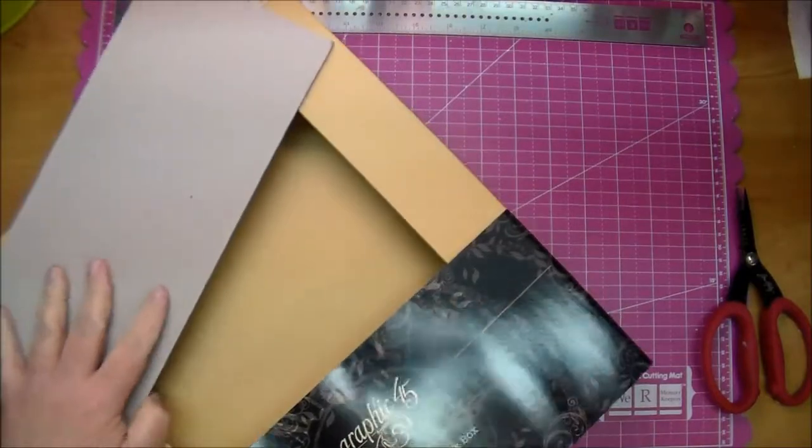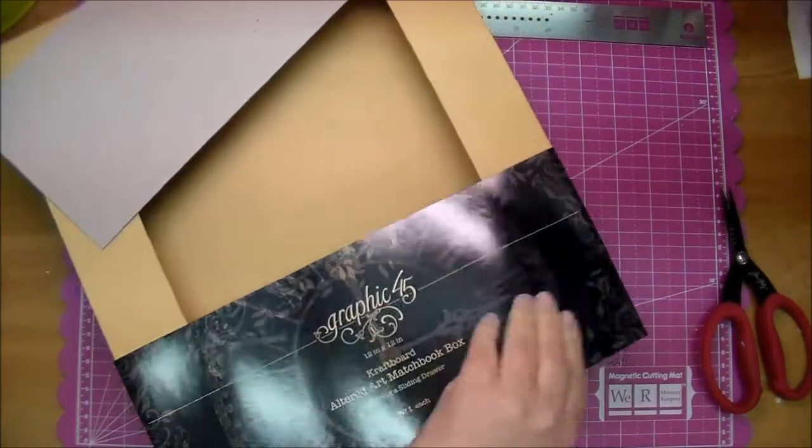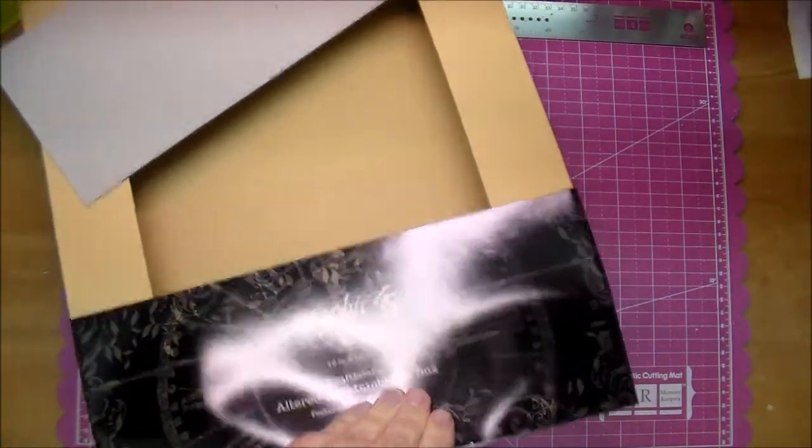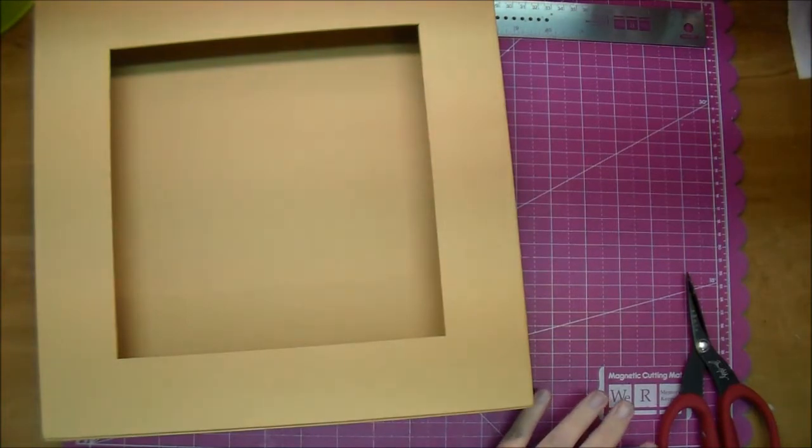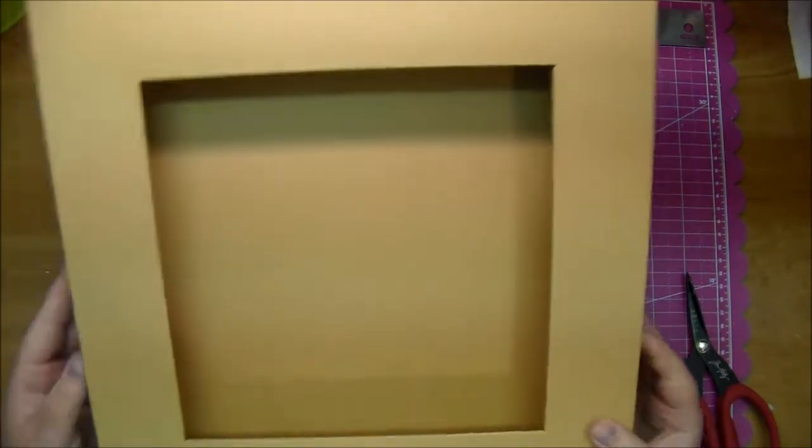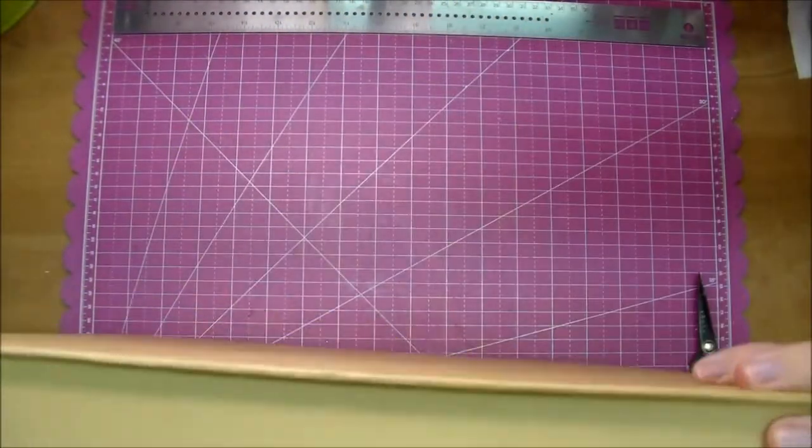So I'm using the 12 by 12 Graphic 45 Matchbook box. You've probably seen me use them in 8 by 8 and 3½ by 5. These are super fun to work with. They have two pieces to them and they just slide out just like a matchbook does. So I'm going to separate them and use the bottom portion, the shadow box portion. The top of it I can save and use for something else.